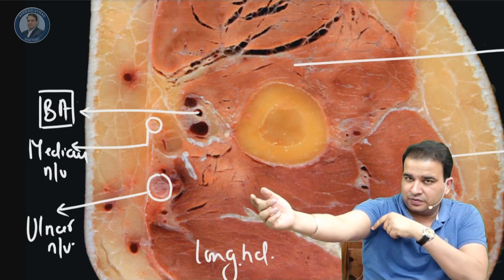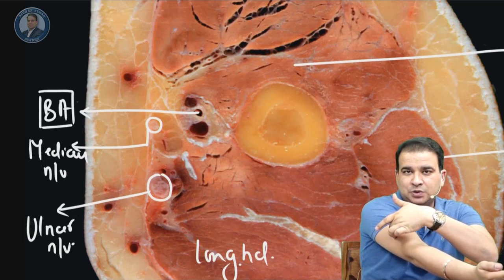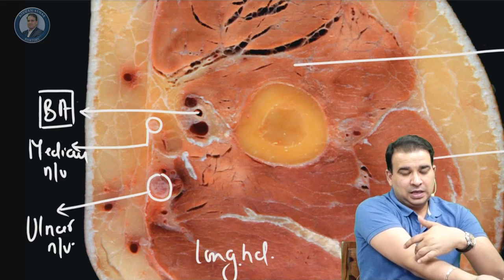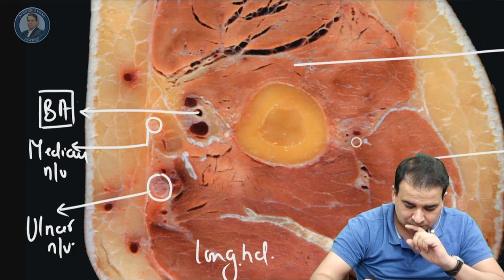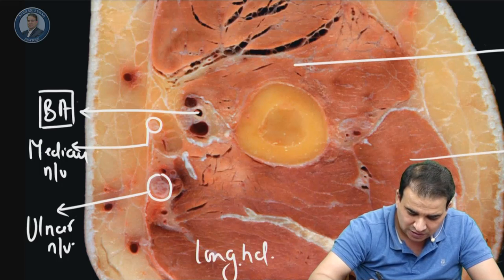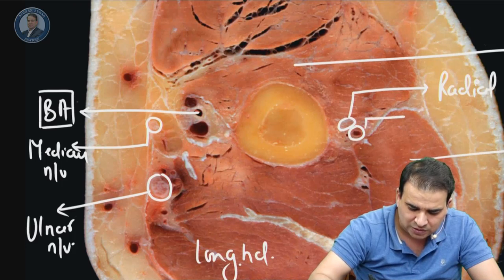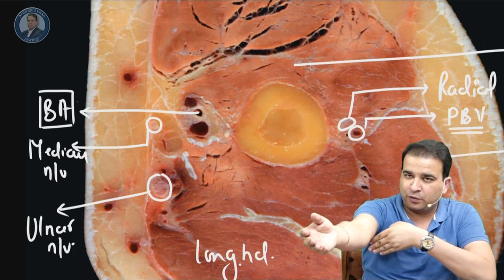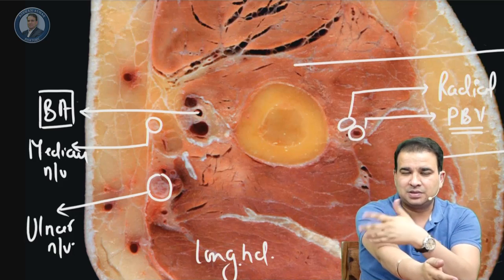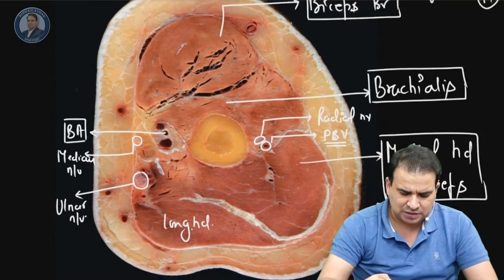The radial nerve travels from the axilla through the spiral groove toward the lateral side, piercing the lateral intermuscular septum to come in front of the lateral epicondyle. You can see the lateral intermuscular septum here, and the nerve in front of it is the radial nerve. Running along with it are the profunda brachii vessels, which also travel in the spiral groove and pierce the intermuscular septum together.